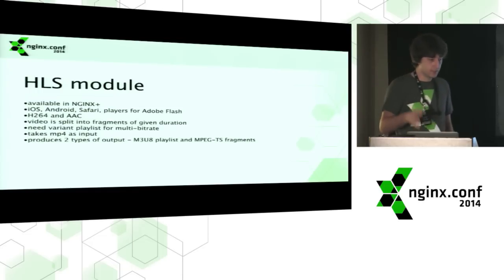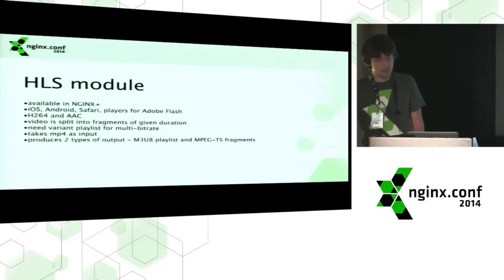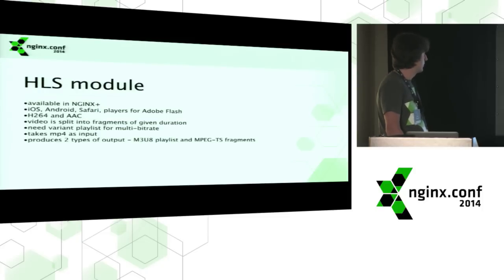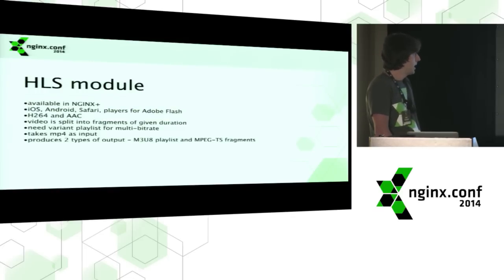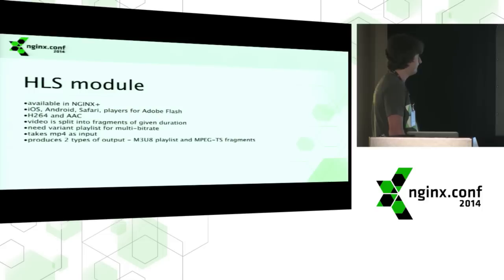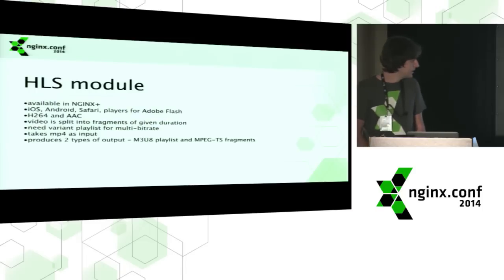HLS is well-suited for mobile streaming since network conditions can be really bad — a phone can lose network and then find it again, and a persistent connection can break in that case. With many small requests, that's okay. HLS is supported almost everywhere: on iOS and Android devices, natively by Safari, and there is also the possibility to play it from Flash. The input for the HLS module is an MP4 file and the output is an M3U8 playlist and fragments in MPEG-TS format.